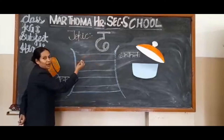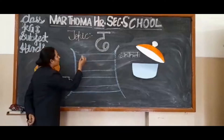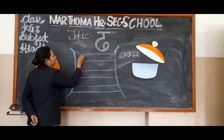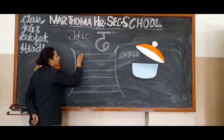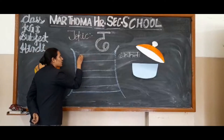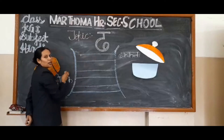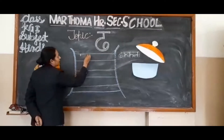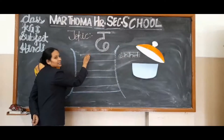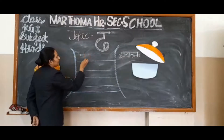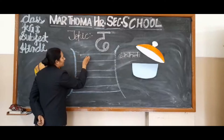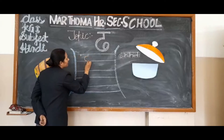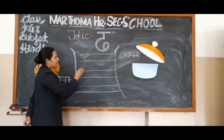Look at the blackboard very carefully. First step is one small standing line. Next is one standing line. Make a semi circle.